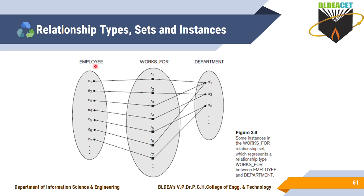Employee is one entity type and Department is also one entity type, and D1, D2, D3 are the entities. If you want to specify a relationship between employee and department — how entities of employee are related with the entities of department — that is what we call a relationship type.